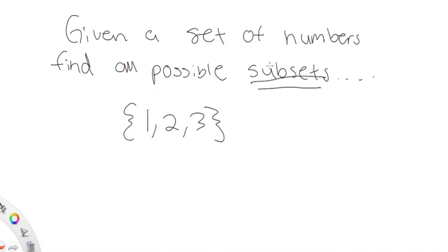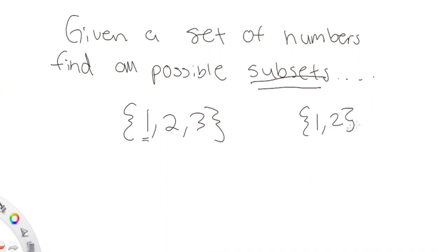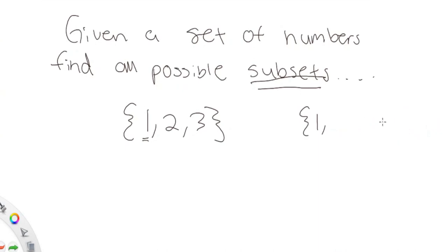A subset is basically a set of numbers from {1, 2, 3} where you pick some values. I could pick just one — that's a subset. I could pick two — that's another subset. For the sake of this video, the set {1, 2} is the same as {2, 1}, because you're picking the same values of one and two — they're equivalent.